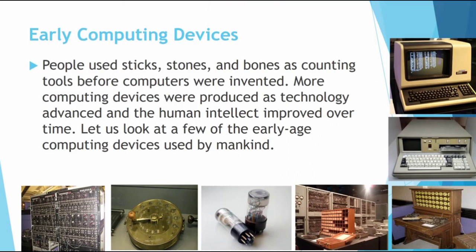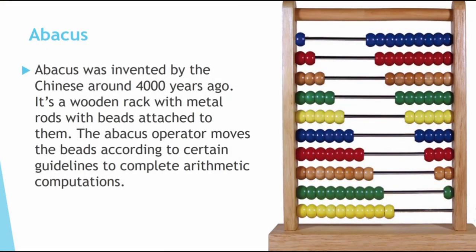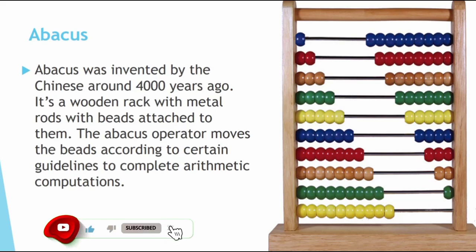What were the early computing devices? Before computers were invented, people normally used sticks, stones, and bones as counting tools. As technology advanced and human intellect improved over time, more computing devices were produced. The first one is the abacus, which was invented by the Chinese around 4,000 years ago. It is a wooden rack with metal rods with beads attached to them.